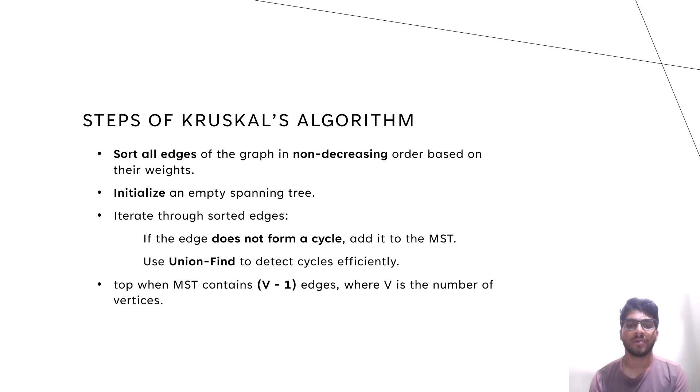If the edge does not form a cycle, add it to the MST. Use union-find to detect cycles efficiently. Stop when MST contains v-1 edges, where v is the number of vertices.